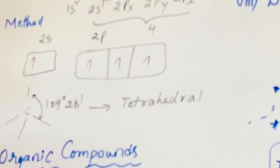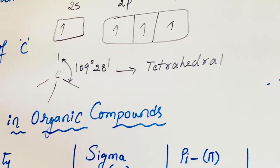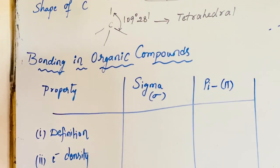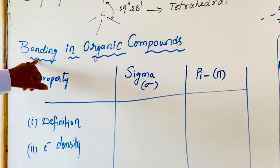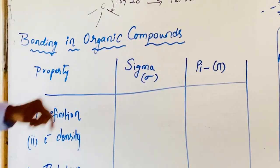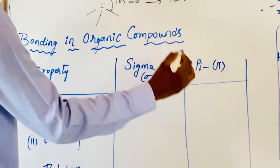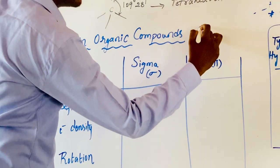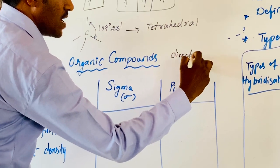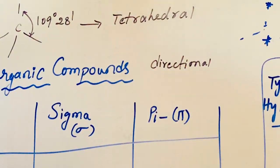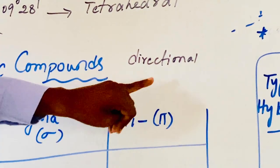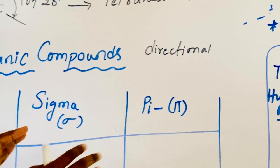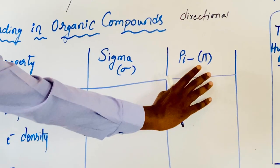Coming to bonding in organic compounds — the formation of bonds in organic compounds is explained by the direction of overlapping. Based on the direction of overlapping, bonds are classified into two types: sigma bond and pi bond.